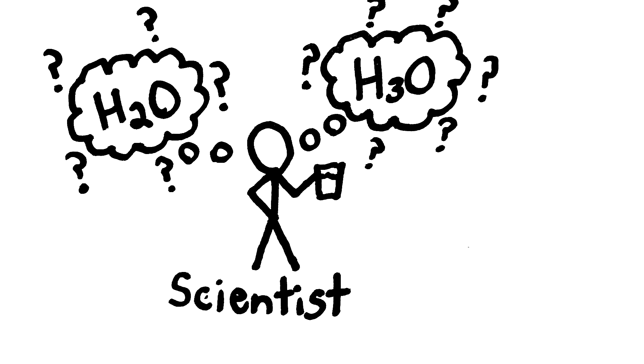Both of these are epistemic possibilities. Either it's metaphysically necessary that water is H2O, or it's metaphysically necessary that water is H3O. But until he does some experiments, he doesn't know which it is.